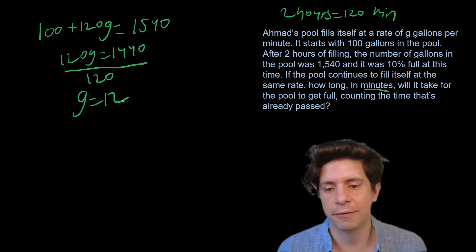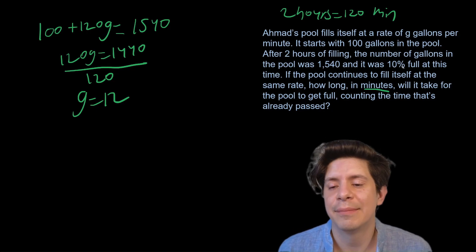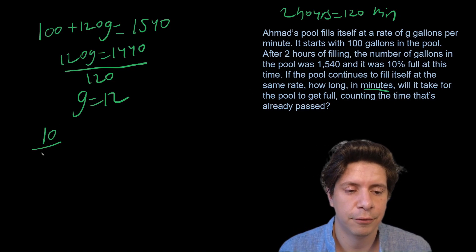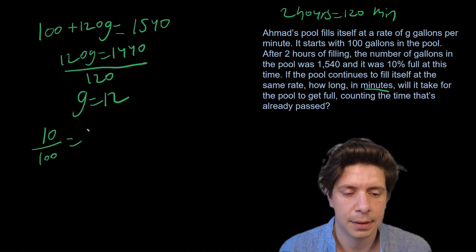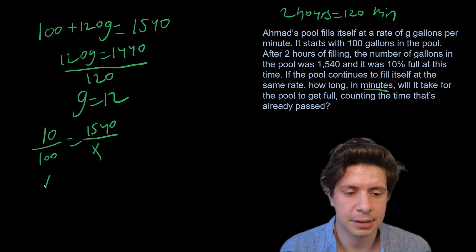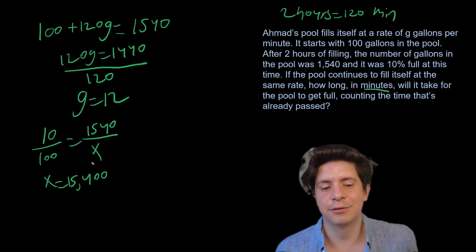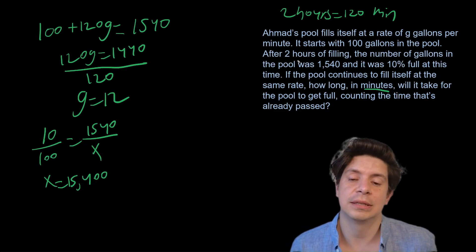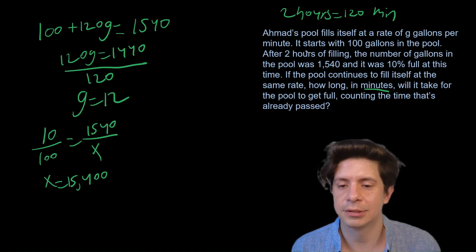That's 12 gallons per minute, pretty fast I think. So it's 10% full at 1540, so 10/100 equals 1540/x. x equals 15,400. You don't need to do that step, but I'm going to do it.